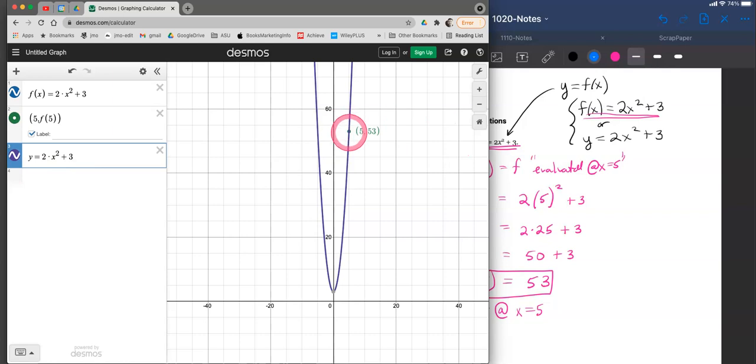5, f of 5 is a point on the graph. It is also a solution of this equation right here. One could create a table of values if you wanted. Nice thing about a function, one can then just write f of x, where f of x is the formula that we already know. And if you put in 5 for x, the y value comes out to be 53.